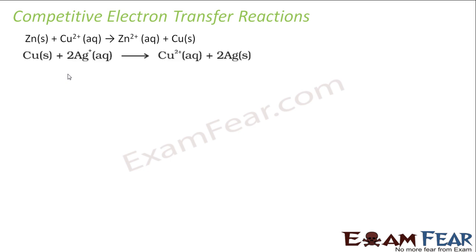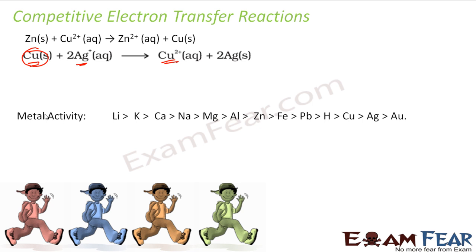For example, if you react zinc with copper sulfate you get this reaction. If you react copper with silver nitrate, you see that copper gets oxidized — that means copper is stronger than silver, or copper wants to lose electrons more readily than silver. Similarly, you can develop a metal activity chart. Lithium wants to release or give electrons most easily — it gets oxidized most easily — because it becomes Li⁺ and becomes more stable. The order goes: lithium, potassium, calcium, sodium, and so on.